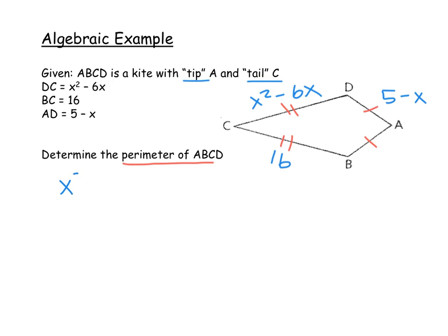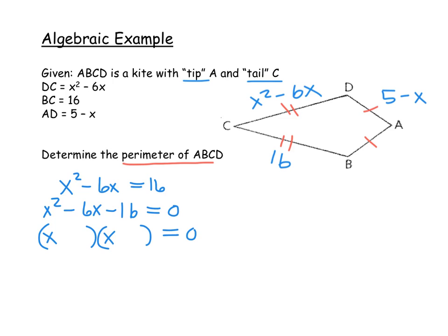Using the definition of a kite, CD is congruent to CB, so x² − 6x must equal 16. This is a quadratic equation, so we set it equal to zero by subtracting 16 from both sides: x² − 6x − 16 = 0. Factoring this, we look for two numbers that multiply to −16 and combine to −6, which gives us (x − 8)(x + 2) = 0. Using the zero product property, x − 8 = 0 or x + 2 = 0, giving us x = 8 or x = −2.